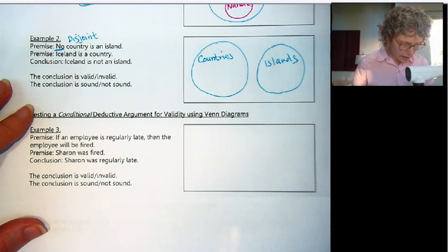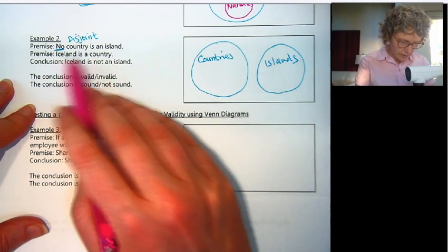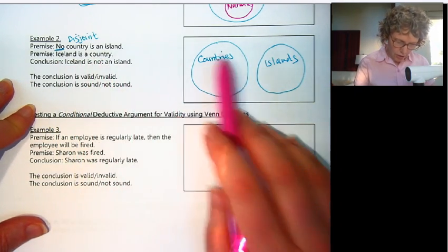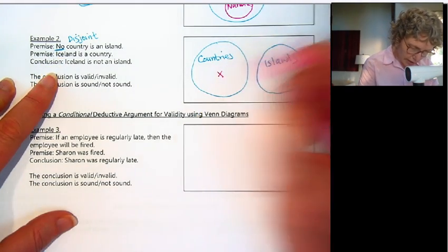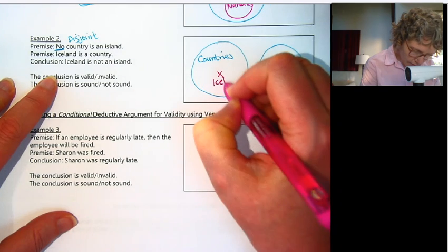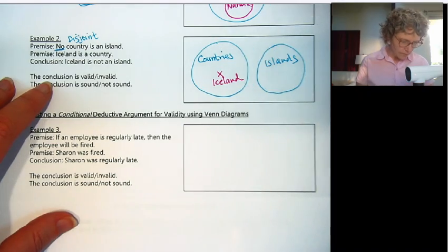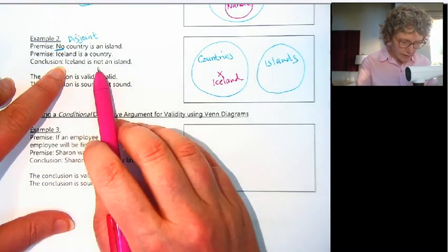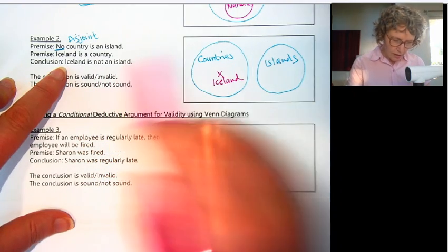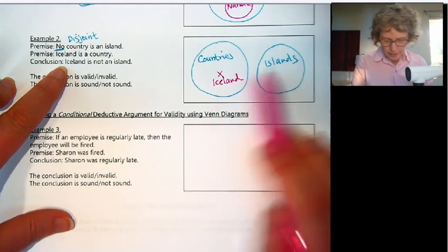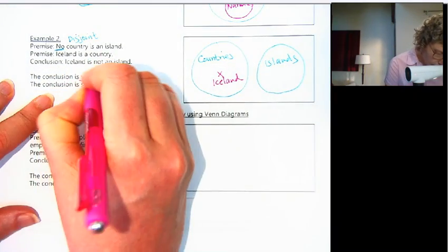Our second premise is Iceland is a country. So Iceland would go in the countries circle — I'll put an X there. And our conclusion is Iceland is not an island. According to our diagram, Iceland is not in the island circle, so this is a valid deductive argument.